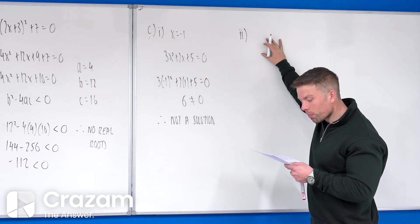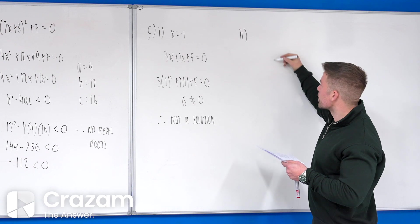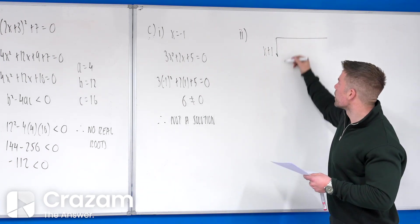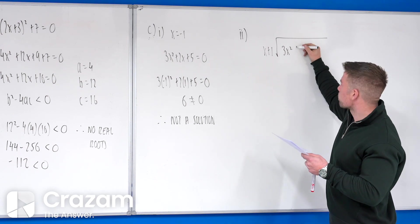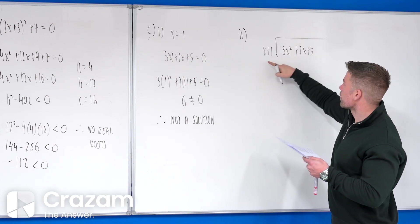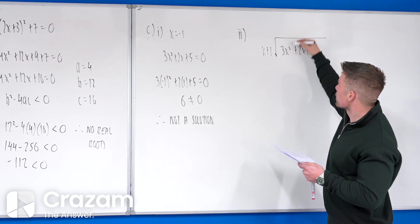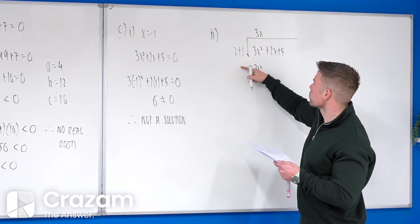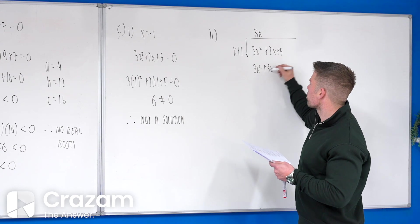Okay, so it's looking for the remainder here. The easiest way to do this is to do some long division. So x plus 1 into 3x squared plus 2x plus 5. x into 3x squared goes 3x. Multiply that in front. 3x squared plus 3x.